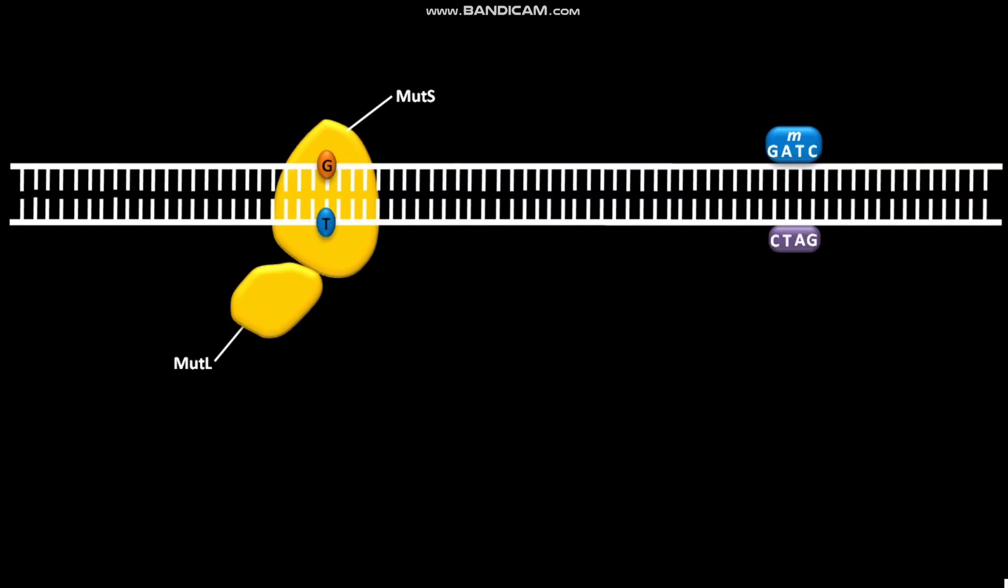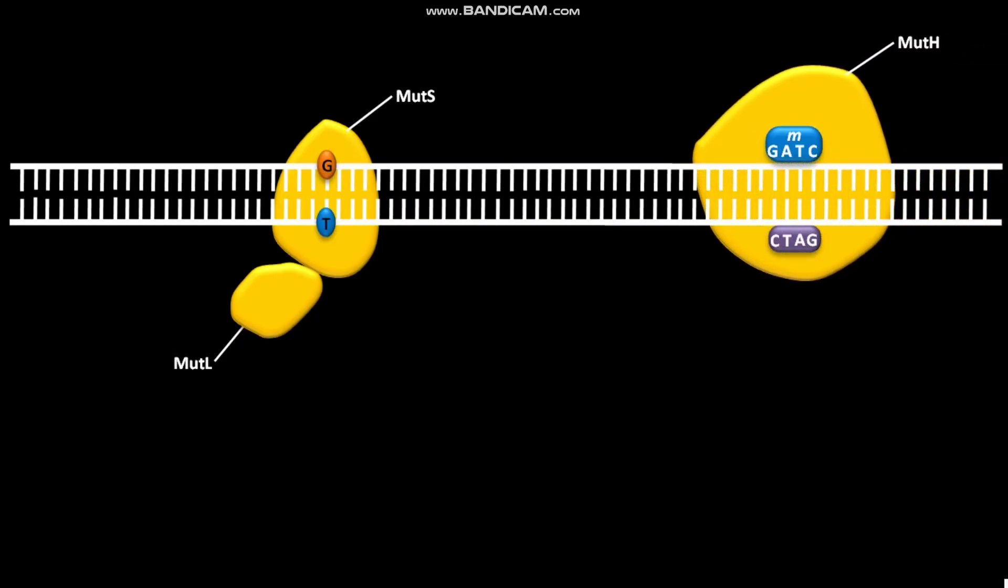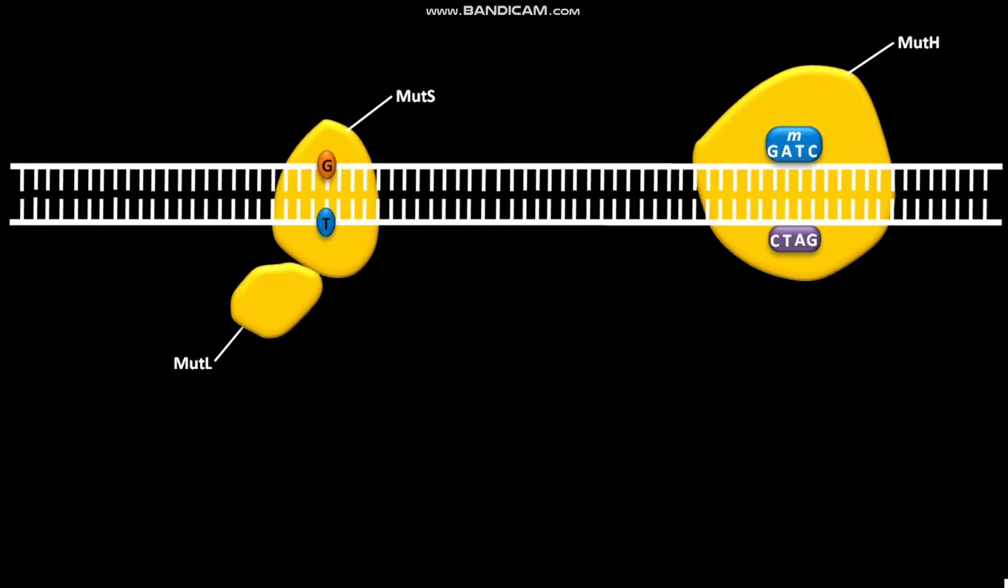The formation of this complex recruits MutH to the region. MutH binds to a hemimethylated site. The binding of MutH requires ATP hydrolysis. The MutL-MutS complex then interacts with MutH by a DNA looping mechanism.